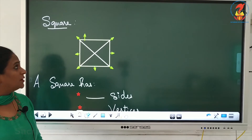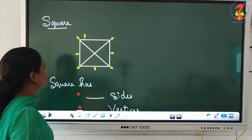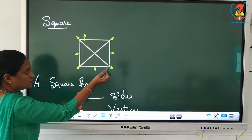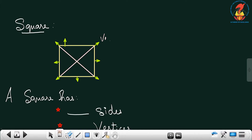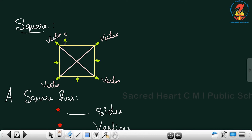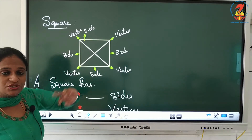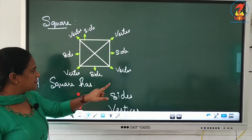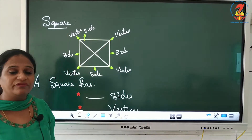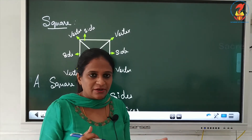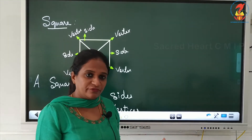Now let us move on to the next shape — a square. I have already drawn the diagonals, the line going from one vertex to the opposite vertex. A square has four sides and four vertices or corners, and two diagonals of equal length. The difference is that all sides of a square are of equal length, whereas for a rectangle, only opposite sides are equal.